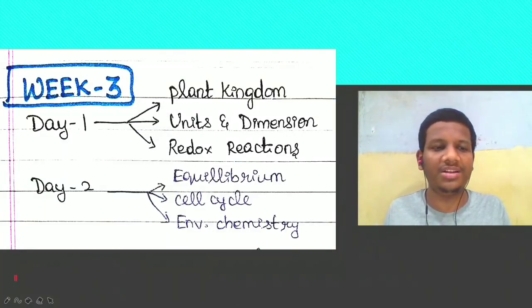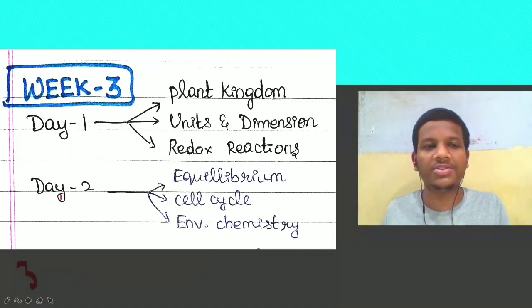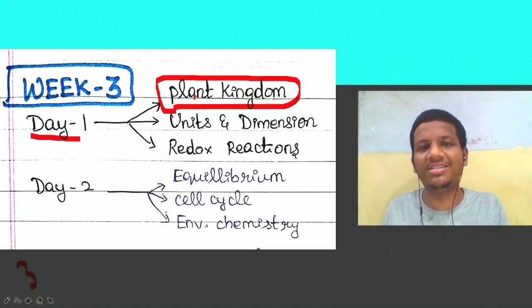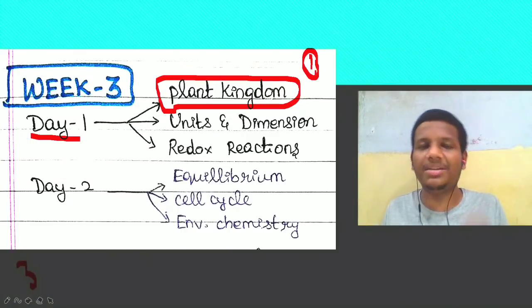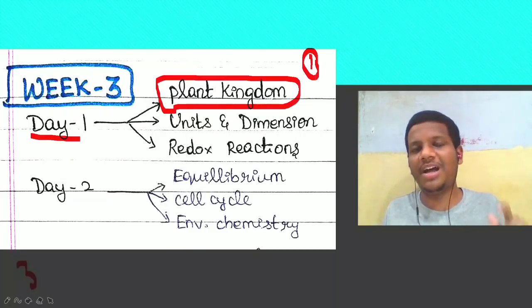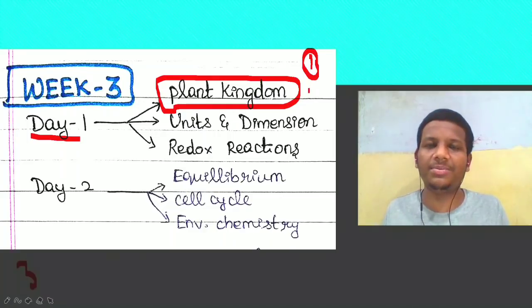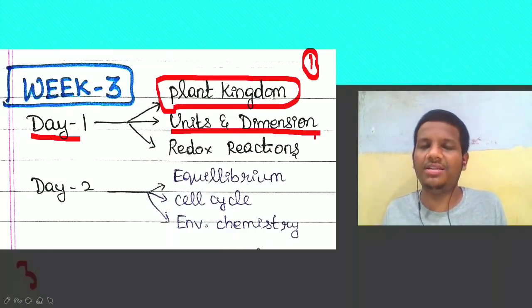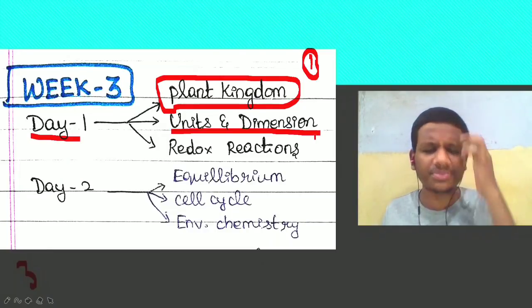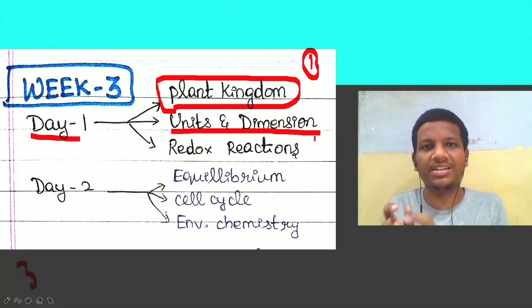Looking at day 1 and day 2, we can see a pattern of 3 plus 1.5 plus 1.5 plus 1 hours. On day 1, the main chapter is Plant Kingdom — one of the most important chapters in biology. We have uploaded Plant Kingdom mnemonics on the channel, so you can search 'Plant Kingdom NEET strategies' to find them. Next is Units and Dimensions, one of the most important physics chapters. In NEET 2020, units and dimensions questions were very basic — significant figures and dimensional analysis.